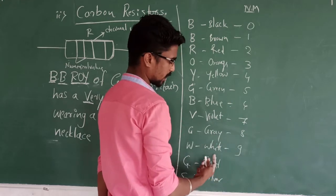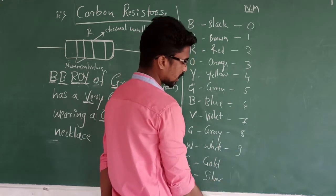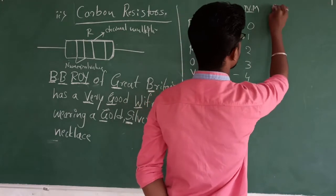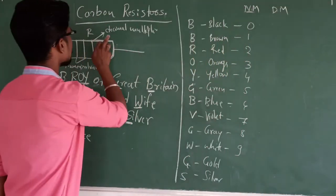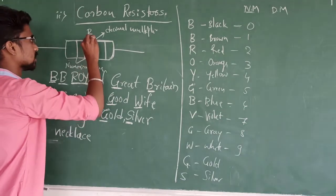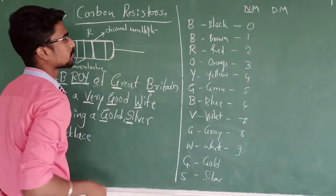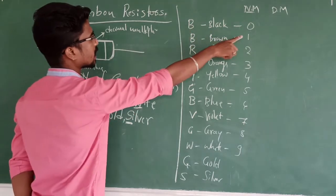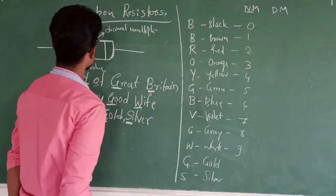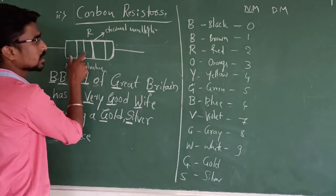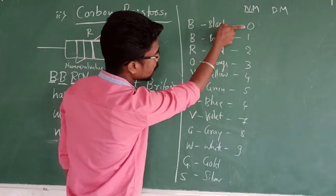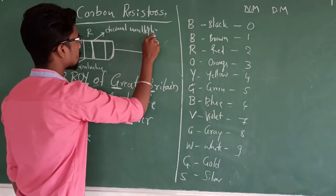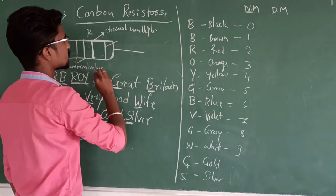These are the numerical values. Gold and silver colors do not have any numerical values but they have a decimal multiplier. The third ring or third line indicates the decimal multiplier, and the first two lines or rings indicate the numerical values of resistance. The fourth ring represents tolerance.